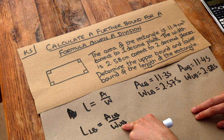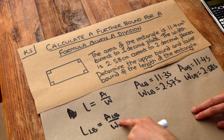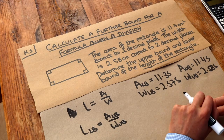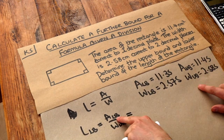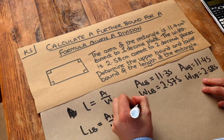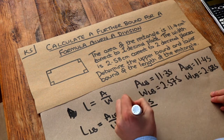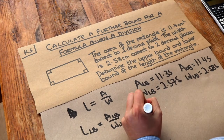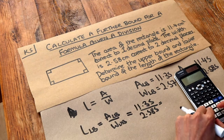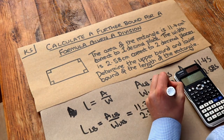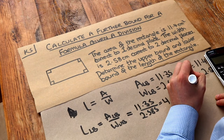Because the bigger the number we divide by, the smaller the number we end up with. So using these quantities, the lower bound of area is 11.35, divided by the upper bound of width, which is 2.585. And we get 4.391 to three decimal places.